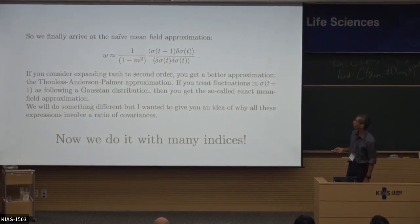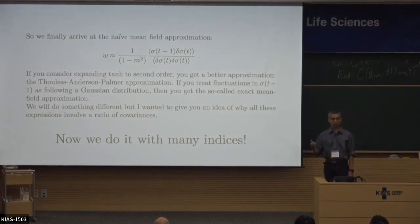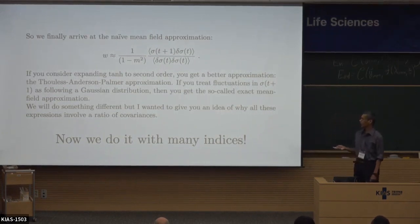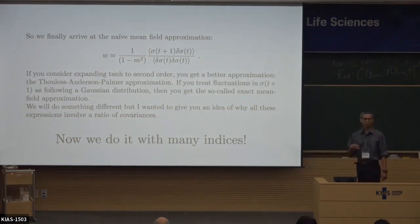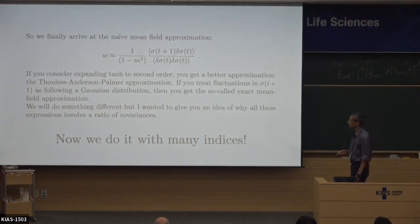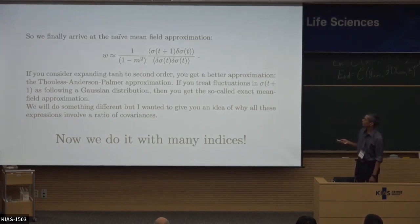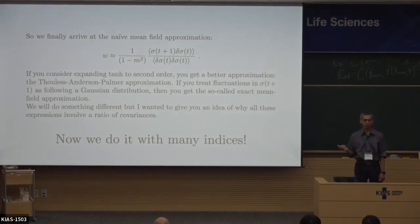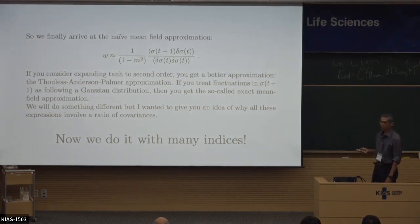Expanding tanh to first order gives the naive mean field approximation. Expanding to second order gives the Thouless-Anderson-Palmer (TAP) approximation. Treating fluctuations in sigma_{t+1} as Gaussian gives the so-called exact mean field approximation. The key result is w written as a ratio of covariances — that's where these expressions come from.